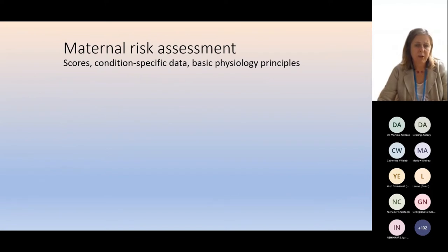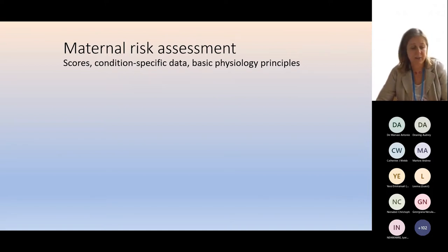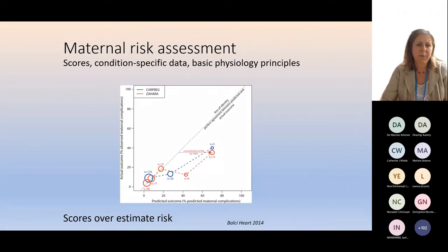Maternal risk assessment can be done by using scores, by using condition-specific data — which in some conditions may be very extensive and in some may be incredibly limited — and by using the basic principles of physiology onto which you put the principles of pregnancy physiology. The point I want to make about scores is that risk scores overestimate risk.